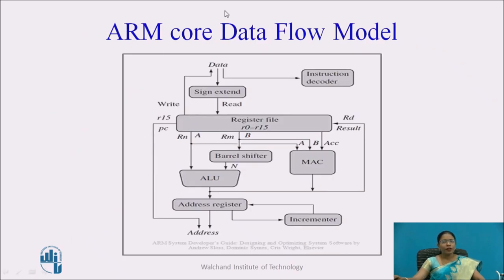This is the diagram of the ARM core data flow model. As already mentioned, it shows the sign extend hardware, instruction decoder, register file, barrel shifter, MAC, ALU, and address register with incrementer. Throughout the diagram you can see flow lines — these are the buses which are carrying data and instructions.